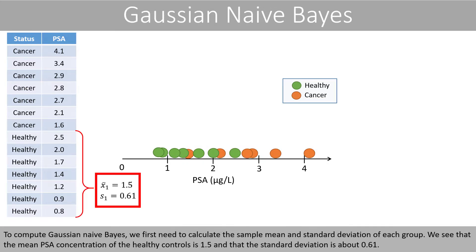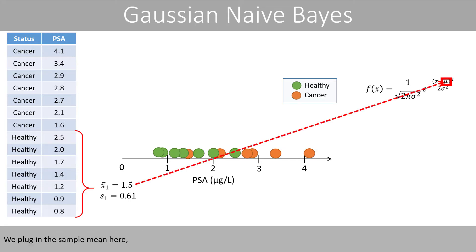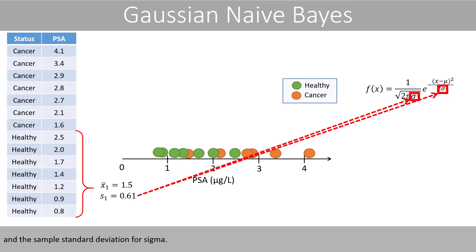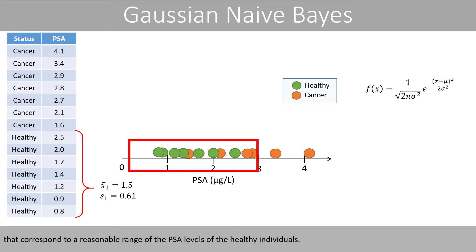To compute Gaussian Naive Bayes, we first need to calculate the sample mean and standard deviation of each group. We see that the mean PSA concentration of the healthy controls is 1.5 and that the standard deviation is about 0.61. For illustrative purposes, we can then place a Gaussian curve on top of the data points of the healthy controls by using the function for the normal distribution. We plug in the sample mean and the standard deviation for sigma, then calculate the height of the Gaussian curve for a range of different PSA values that correspond to a reasonable range of the PSA levels of the healthy individuals.